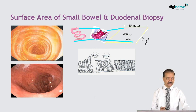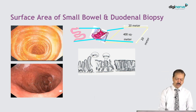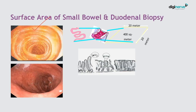This is the normal duodenum where you get multiple valvulae conniventes, which are important because they increase the surface area of the bowel. Surface area is further increased by finger-like villi projections, and over each epithelial cell there are multiple microvilli.